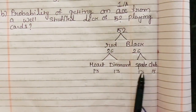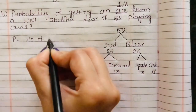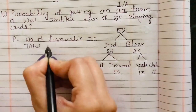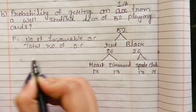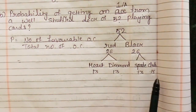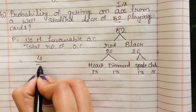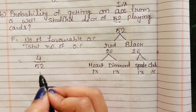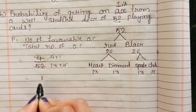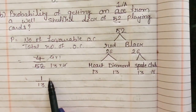Now, अगर हम 4 suits में से देखें तो हर suit में 1 Ace होगा। So first of all हम probability की formula लिखेंगे — probability is equal to number of favorable outcomes upon total number of outcomes। Number of favorable outcomes कितने होंगे — हमें S (Ace) find करना है, तो सभी suits में से 1-1 Ace होगा — 1, 2, 3 and 4। So number of favorable outcomes होंगे 4, and total number of outcomes यानि कि total number of cards होंगे 52। So 4 upon 52 — कट करेंगे तो 1 upon 13।